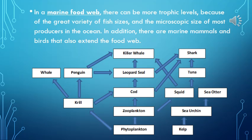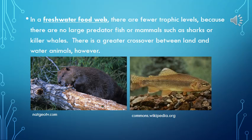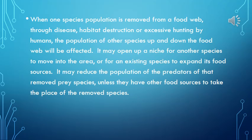In a marine food web, there can be more trophic levels because of the great variety of fish sizes and the microscopic size of most producers in the ocean. In addition, there are marine mammals and birds that also extend the food web. In a freshwater food web, there are fewer trophic levels because there are no large predator fish or mammals such as sharks or killer whales, though there is greater crossover between land and water animals. When one species population is removed from a food web through disease, habitat destruction, or excessive hunting by humans, the populations of other species up and down the food web will be affected. It may open up a niche for other species or expand existing species' food sources, but may also reduce the population of predators of that removed prey species unless they have other food sources.